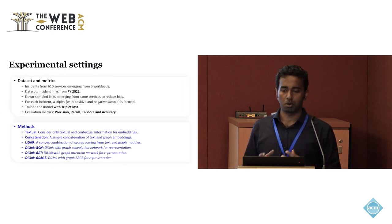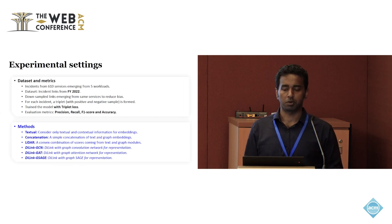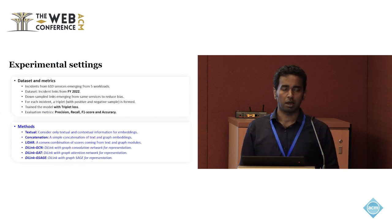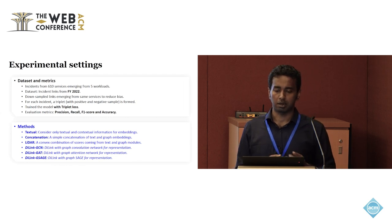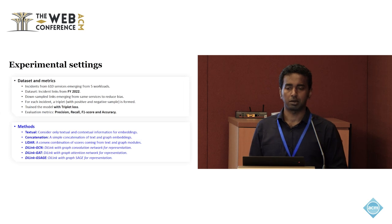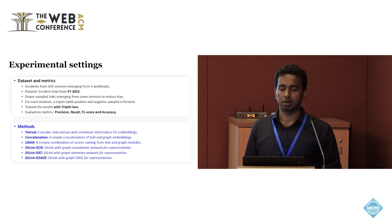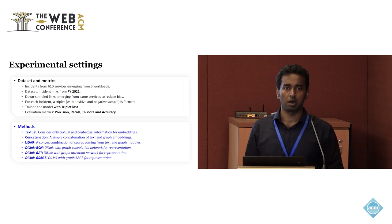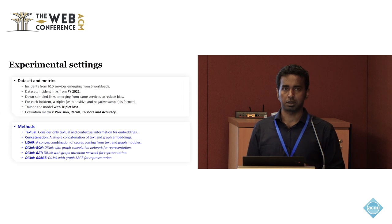For experiments, we took historical similar incident links from five workloads within Microsoft from 2022 and divided them into train, test, and validation sets. For each incident, we created a triplet with a positive similar incident example and randomly picked negative samples, and used triplet loss for training. We compared our method with three benchmark approaches: a baseline using only textual information, a direct concatenation of textual and graph embeddings, and a LEADER method that computes similarity scores from textual and graphical modules separately and takes a convex combination of those two scores.